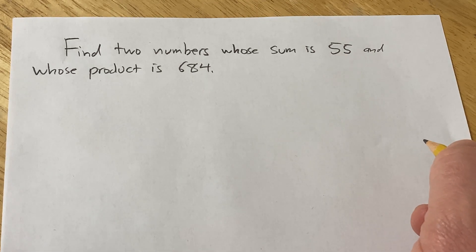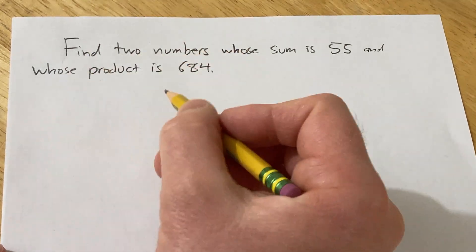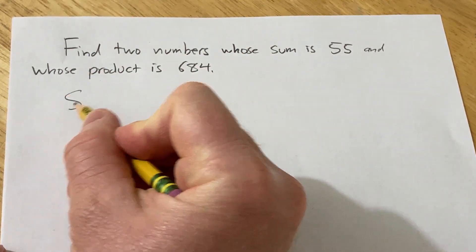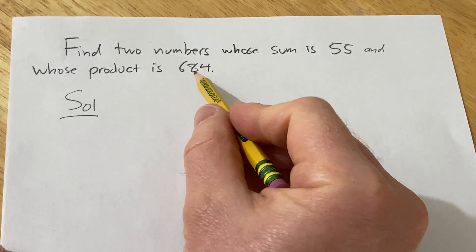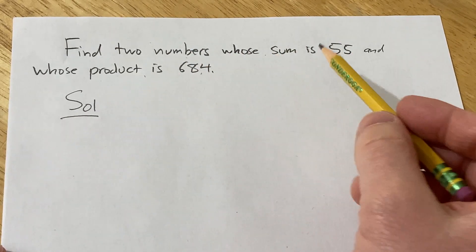Find two numbers whose sum is 55 and whose product is 684. Let's go ahead and try to work through this solution. So we're looking for two numbers that add up to 55 and multiply to 684.